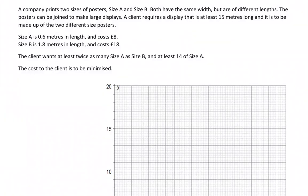In this video we're going to work through a worded linear programming problem. A company prints two sizes of posters, size A and size B. Both have the same width but are of different lengths. The posters can be joined to make large displays.